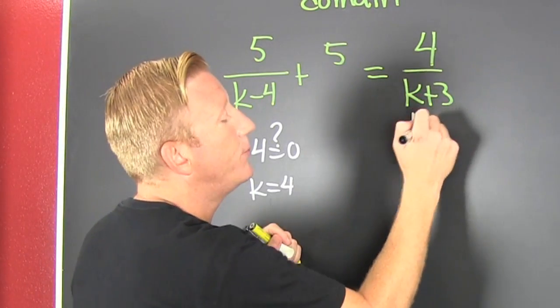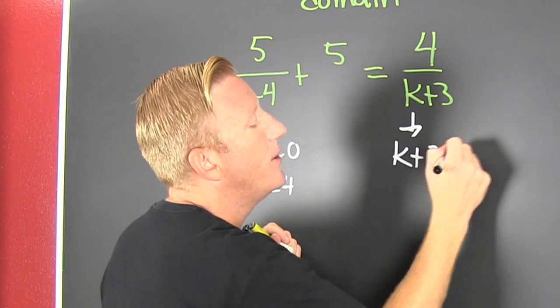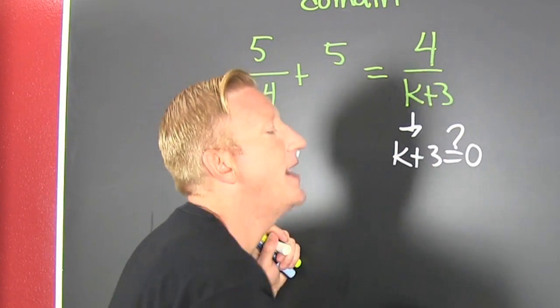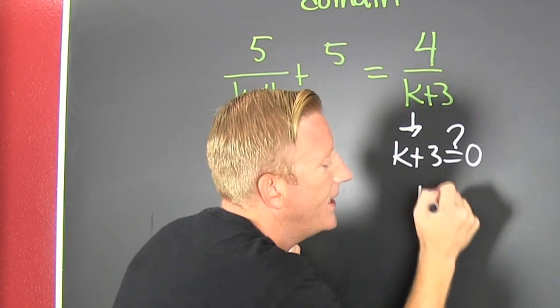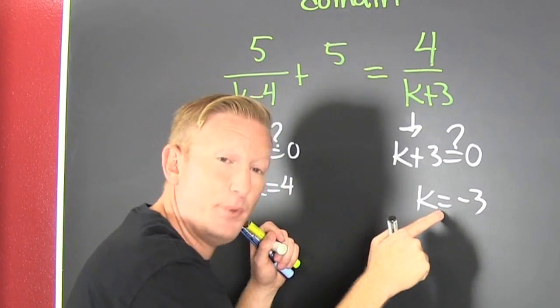Now over here, k plus three — where are you? Zero. k is minus three. That's bad!